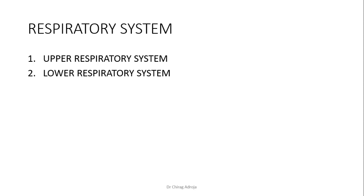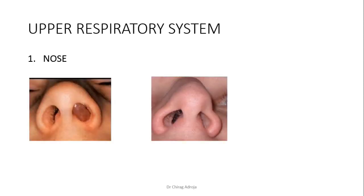Respiratory system examination is divided into upper respiratory system and lower respiratory system. We mostly forget about upper respiratory system, but it is almost equally important. Starting from the nose: nasal polyp is seen in intrinsic asthma which is aspirin-sensitive, Wegener's granulomatosis, allergic bronchopulmonary aspergillosis (ABPA), and cystic fibrosis. Deviated nasal septum — sometimes a patient complains of difficulty in breathing and we look for cause in lung parenchyma, but the cause may be in upper respiratory system. Even chronic upper respiratory obstruction can develop pulmonary hypertension.